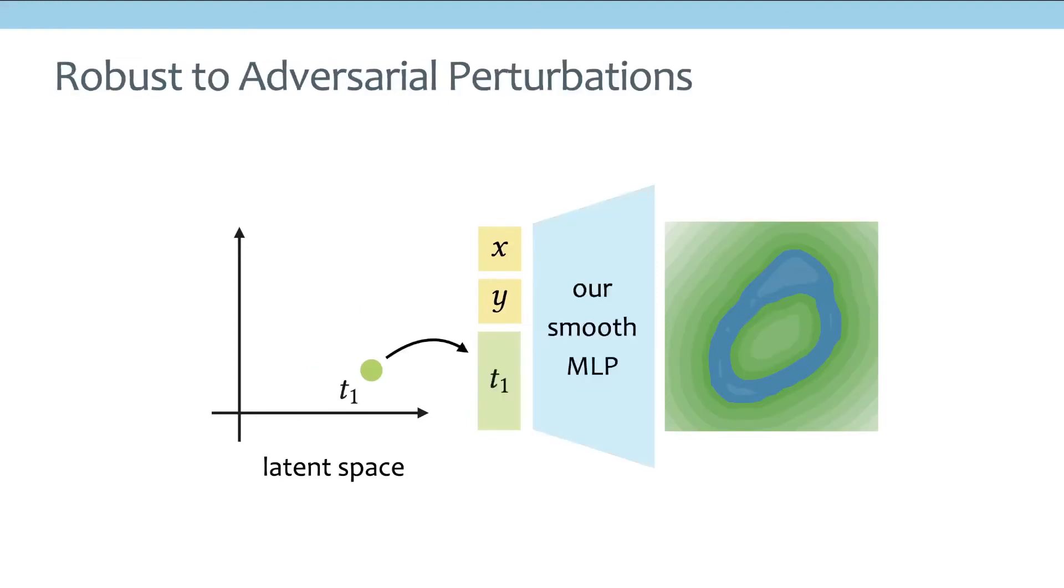But if we use our smooth Lipschitz MLP, and even if we perturb this latent code with the same amount epsilon, because our latent space is smoother, we will still obtain a reasonable digit 0.